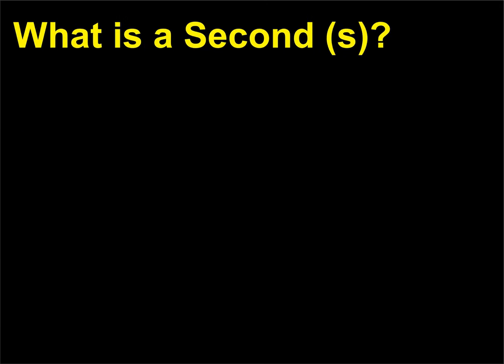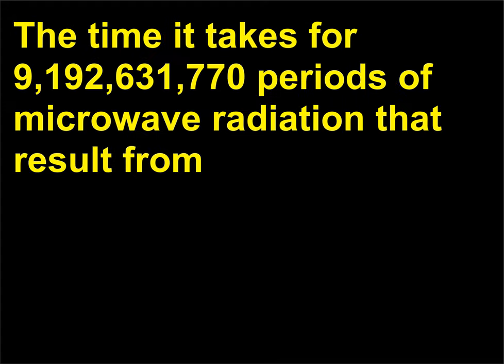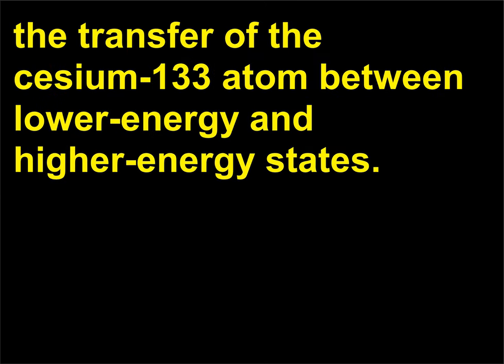What is a second (s)? A second is the time it takes for 9,192,631,770 periods of microwave radiation that result from the transfer of the caesium-133 atom between its lower energy and higher energy states.